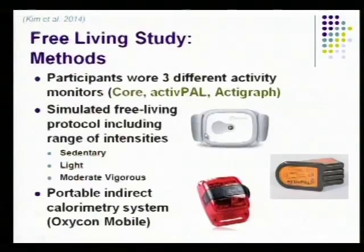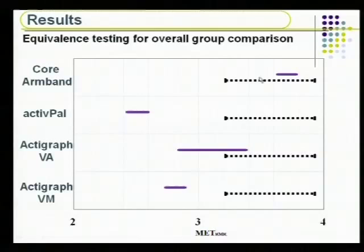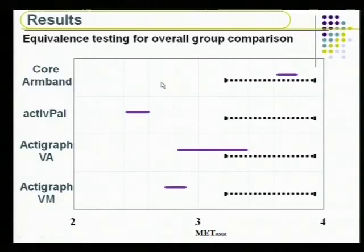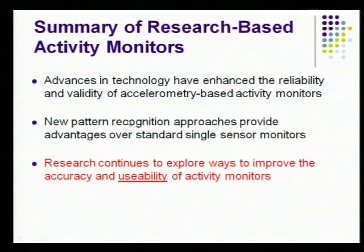We tested it against other research-grade monitors, and the Body Media core armband was the only one that gave an accurate estimate of the criterion measure over this extended free-living protocol. This is just an equivalence test we did to compare — they keep changing the size of these devices as well. Research continues to explore ways to improve accuracy and usability — we keep trying to make them smaller and better. The consumer products have also innovated on their own and have moved ahead of what even some of the research devices have done. It's interesting to see how the technology has moved in that regard.